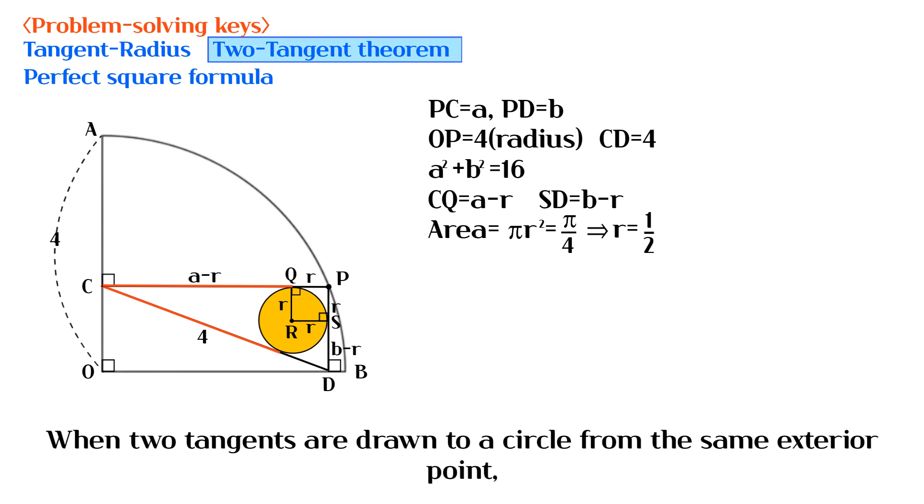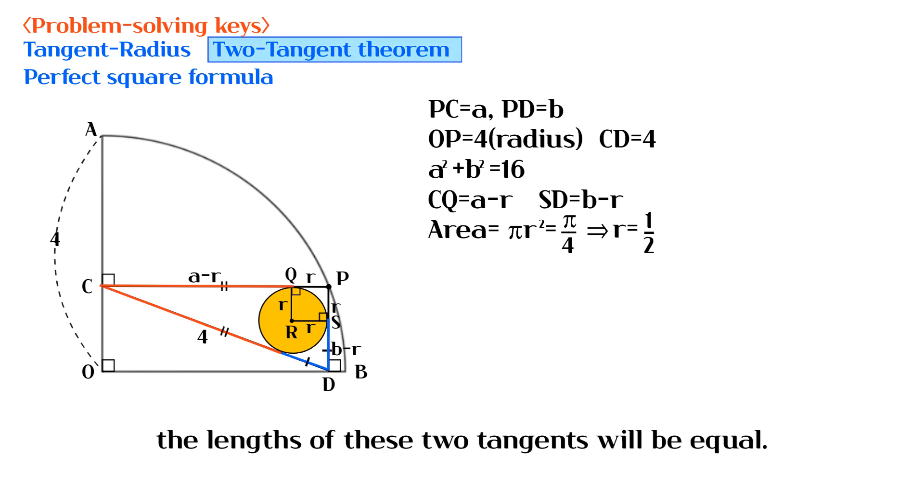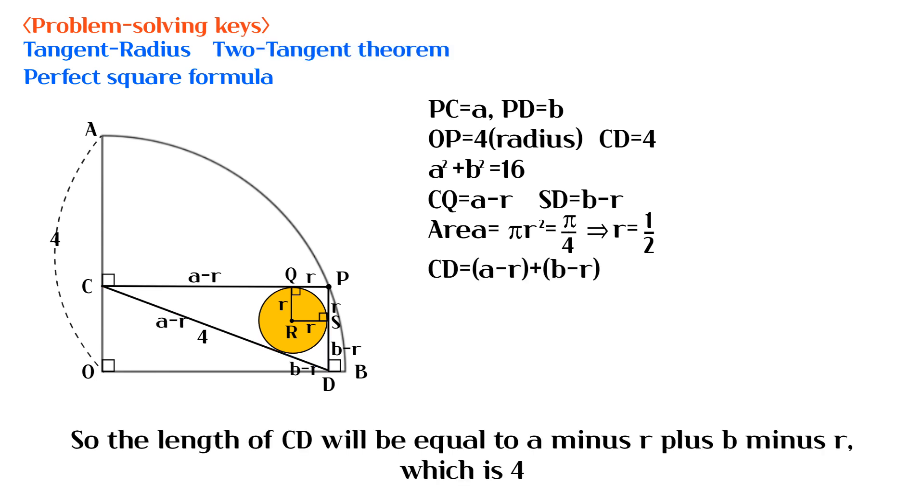When two tangents are drawn to a circle from the same exterior point, the lengths of these two tangents will be equal. So the length of CD will be equal to A minus R plus B minus R, which is 4.